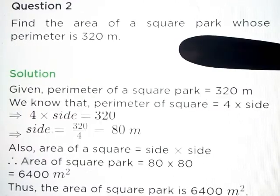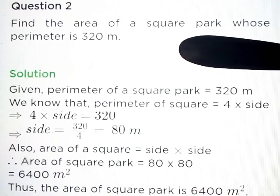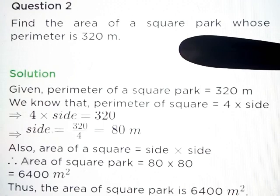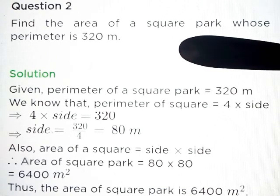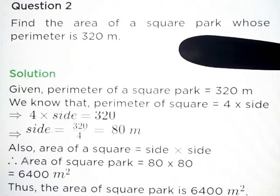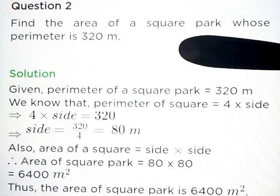Question number 2. Find the area of a square park whose perimeter is 320 meter. Given: perimeter of a square park is equal to 320 meter. We know that perimeter of a square is equal to 4 into side. So 4 into side equals 320, side equals 320 upon 4, that is equal to 80 meter. Also, area of a square park is equal to 80 into 80, which is 6,400 meter square. Thus, the area of the square park is 6,400 meter square.